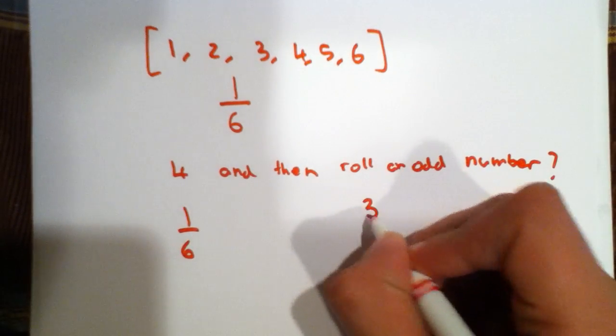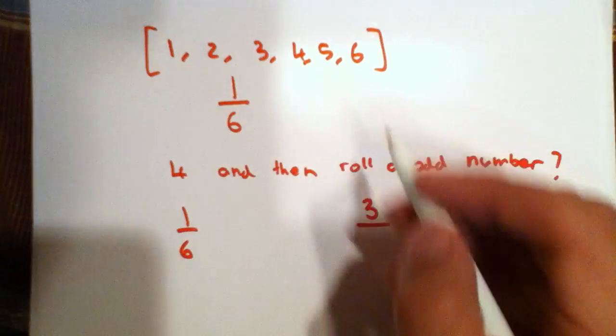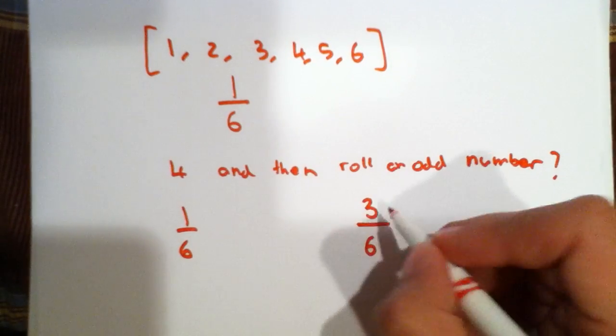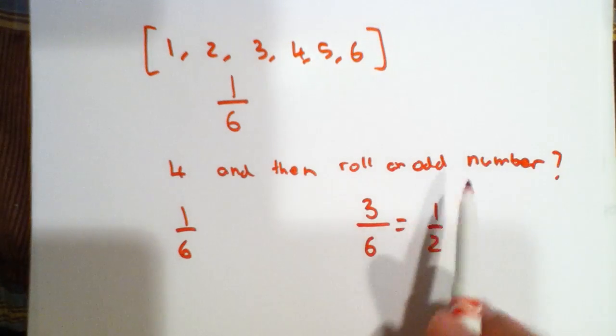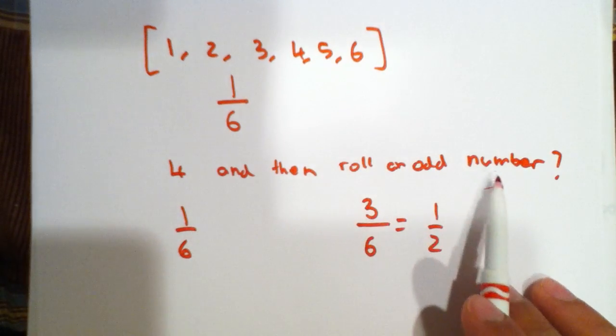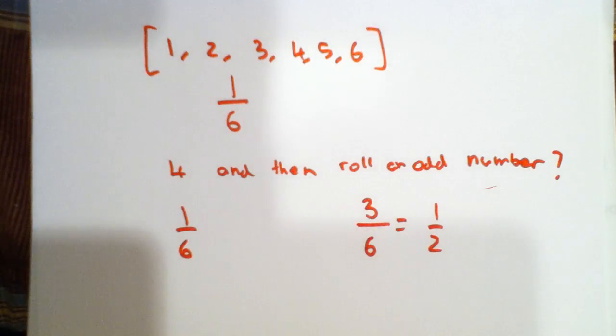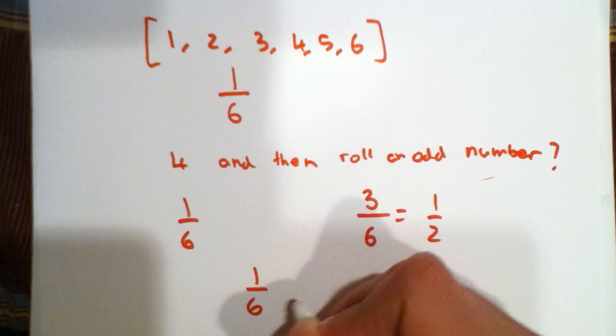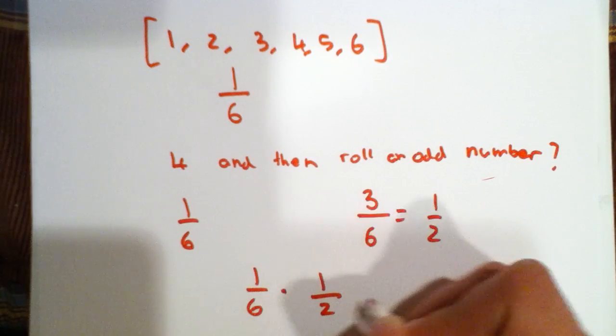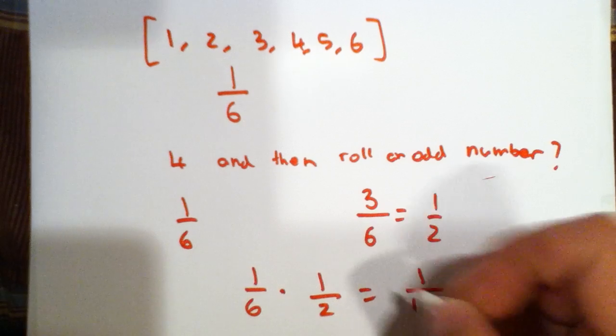So the 3 odd numbers, the total numbers in this set are 6, so it's 3 out of 6 which can be simplified to 1 half. But the question is not asking the probability of rolling an odd number, it's the probability of doing both of these actions. So when you have something like this, you have to multiply the two probabilities together. So you have 1 sixth times 1 half getting 1/12.